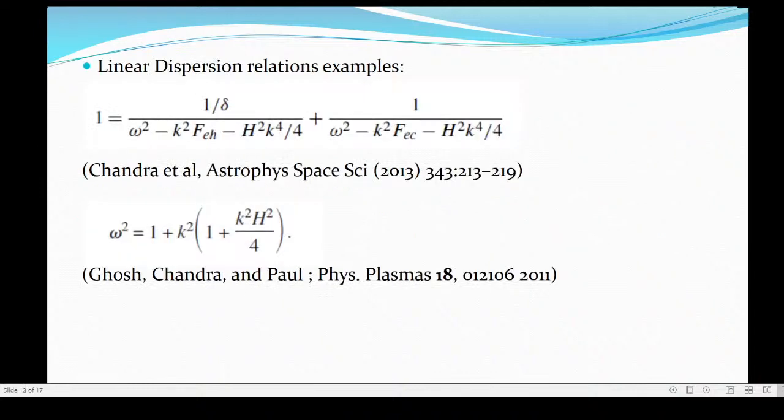Let me give you some examples. In one of our papers you will find in Chandrasekhar Astrophysics which I have already submitted and put in your lecture material. The linear dispersion relation comes like this. You see these are constants - delta f_eh, h, f_ec, these are all constants. You will find this expression. In another paper you see h is a constant, so we get a mode like this: omega as k square plus k to the power 4.